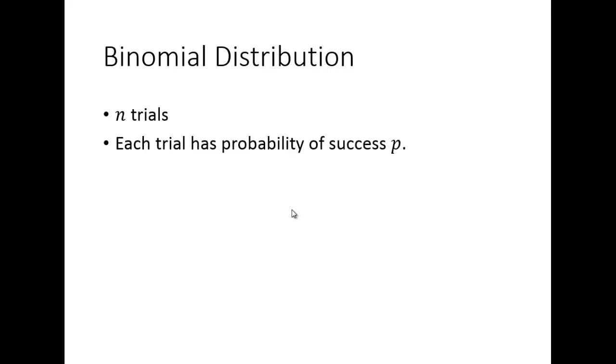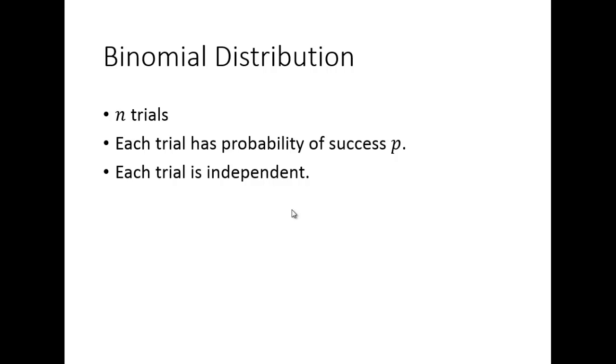We're going to start with the binomial distribution. The setup is: we have n trials, each trial has a probability of success p, we assume each trial is independent, and we're looking for the probability of getting exactly k successes out of the n trials.